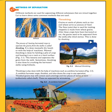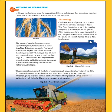Take out page number 40 in your science reader. Now listen — different methods are used for separating different substances that are mixed together. We will see the different methods used to separate substances from mixtures one by one. The first one is threshing.